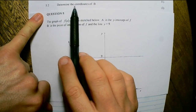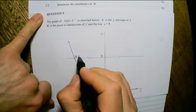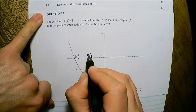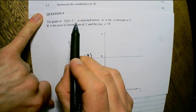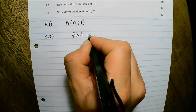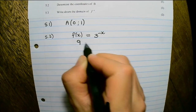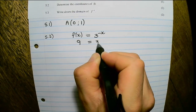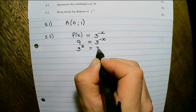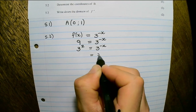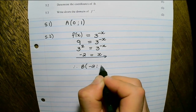The next question reads: determine the coordinates of B. B is on the line y equals 9, so we know the y value of B. To find the x value, we use the equation given. So f(x) equals 3 to the power of negative x, and f(x) represents y. So 9 equals 3 to the power of negative x. Rewriting 9 as 3 squared, and because the bases are the same, we can solve for x. Therefore, B's coordinates are (−2, 9).